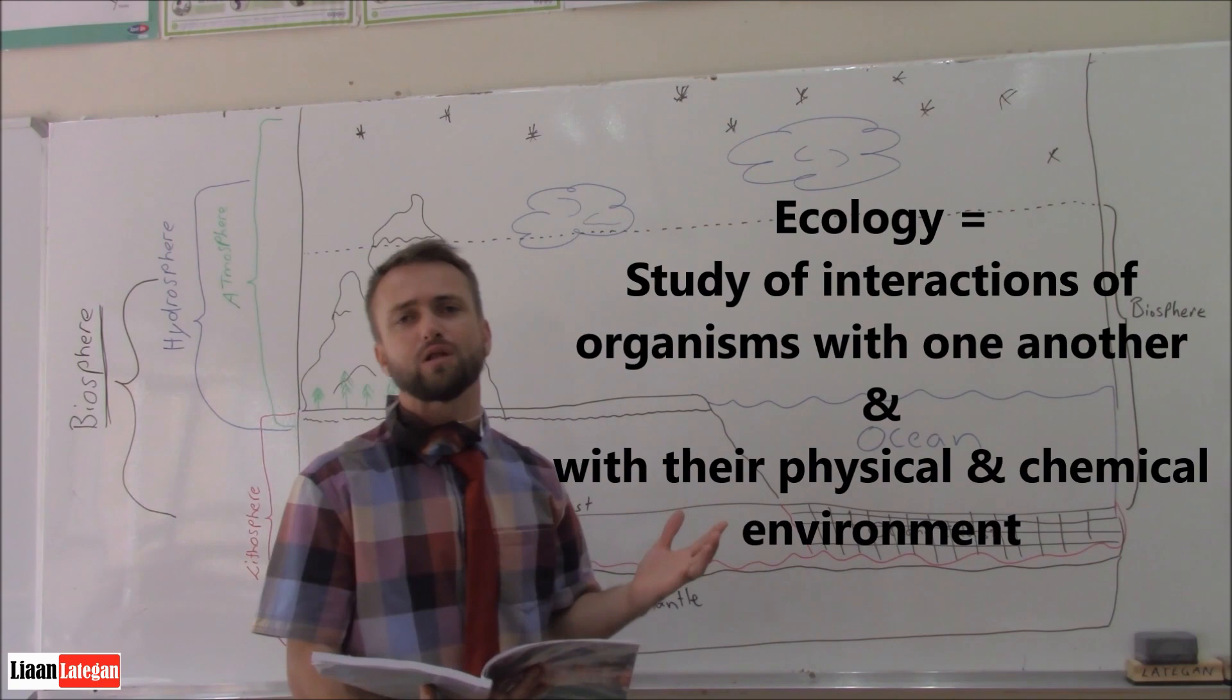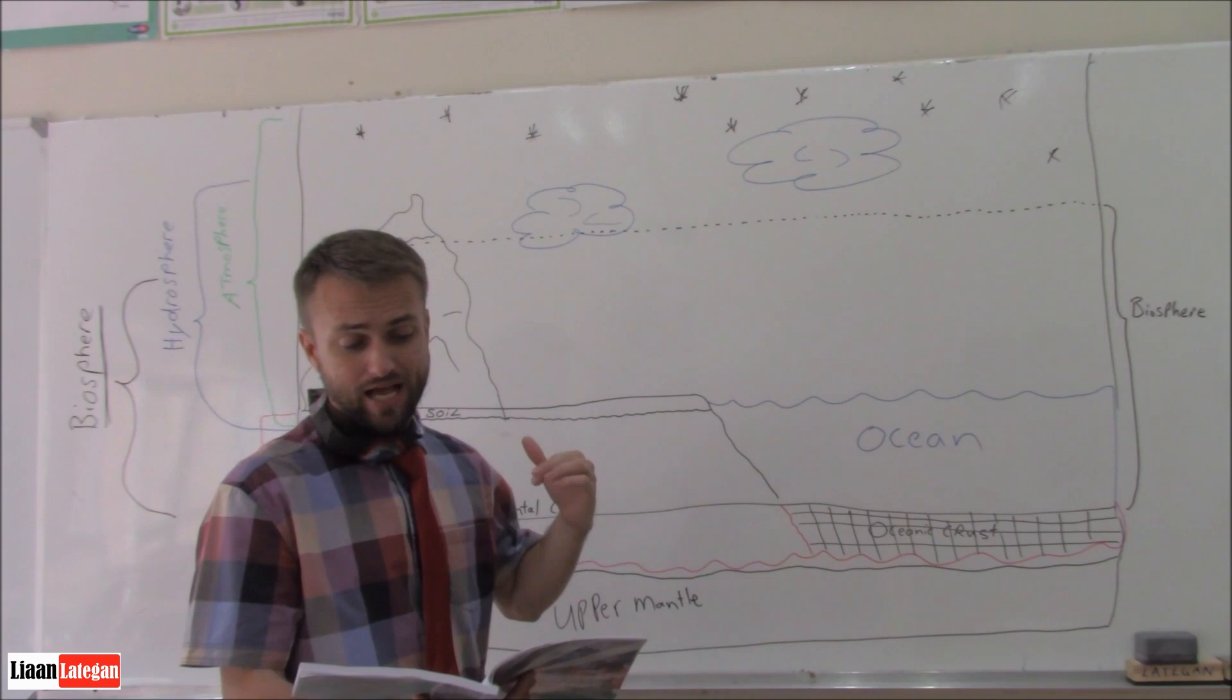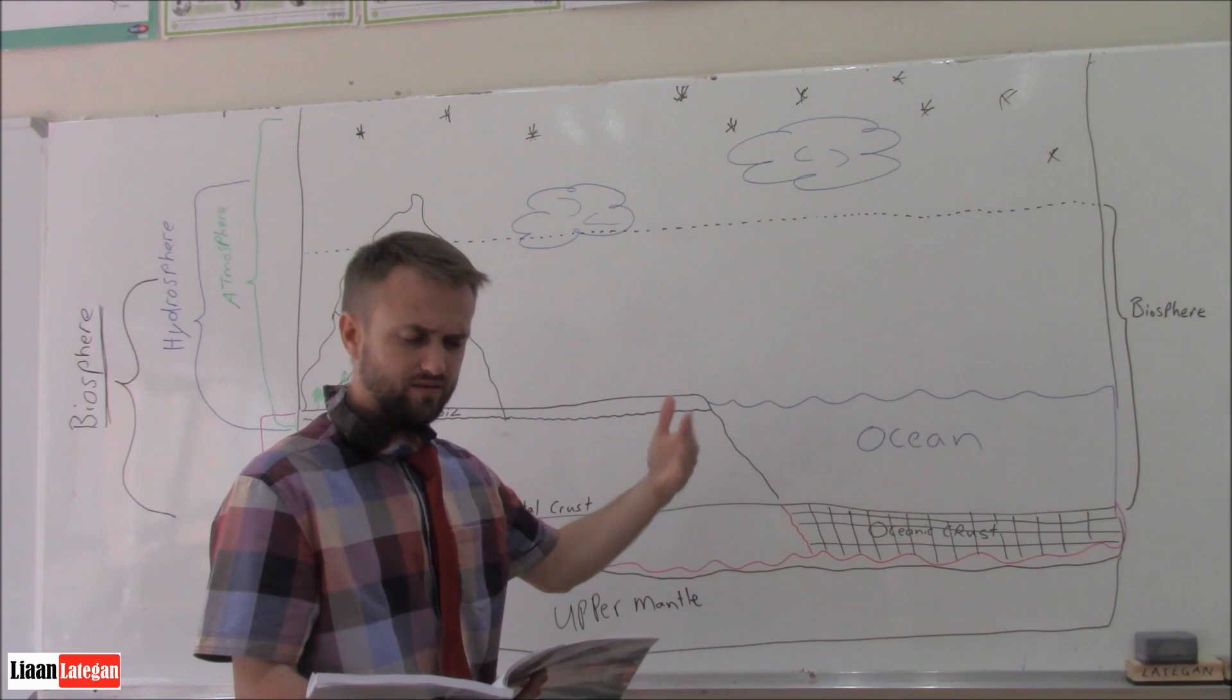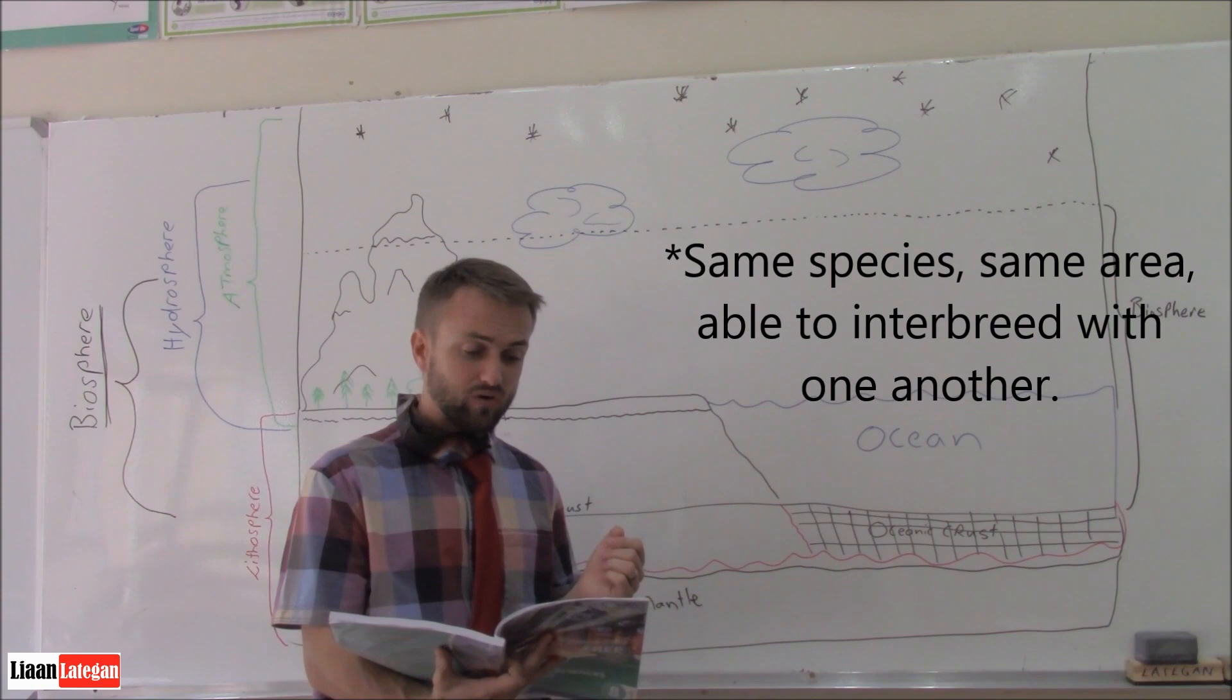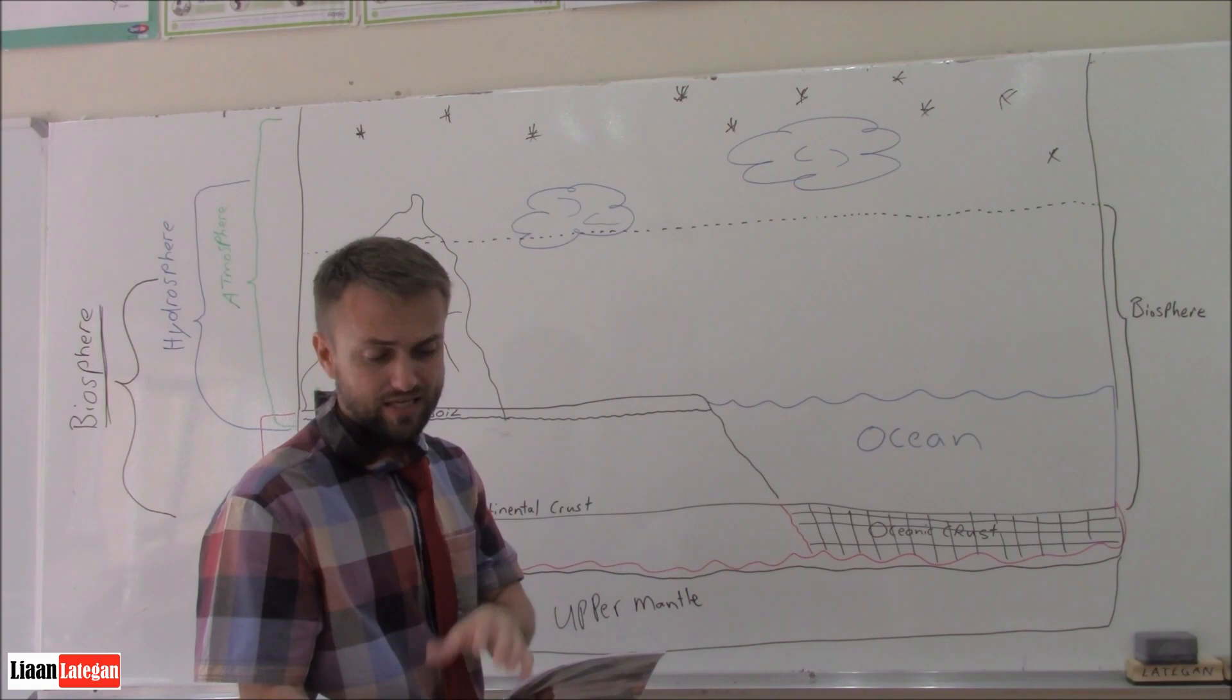So scientists usually classify the study of ecology as their interactions into four different levels. Populations. Those are a group of organisms of the same species that live in the same area and are able to interbreed with each other and in their population. That's called a population.